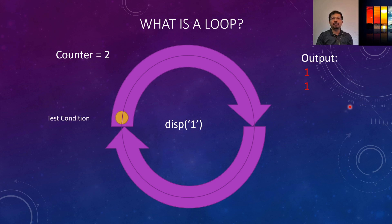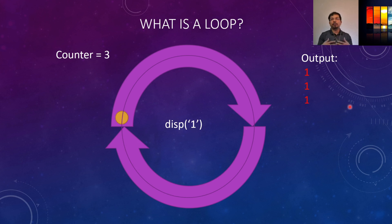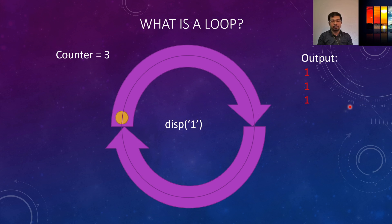Now if the condition is also true it will pass to the next loop, and after completing this loop it will increase the counter variable to three and the output will show three different ones. That is how a loop works in general — we have certain instructions that we want to execute for a certain number of times or for a certain condition, and that will be executed in the command window.